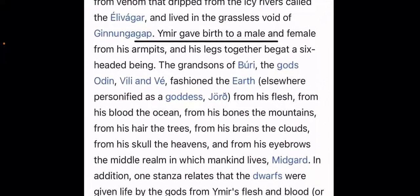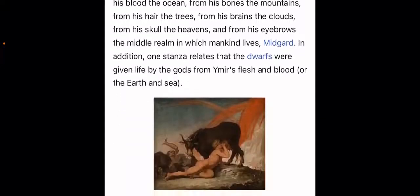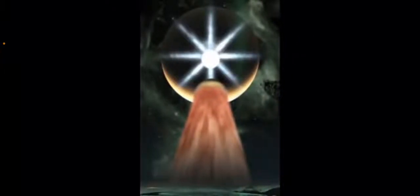There's this archetype of the first man - a cosmic man. We see this in Norse mythology with Ymir. His bones become the mountains, his hair the trees, his brains are the clouds, his skull the sky. And of course we have the bull of heaven in the picture. Ymir drinks the milk of the bull of heaven.